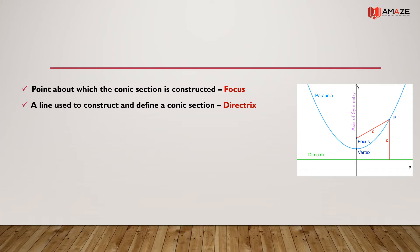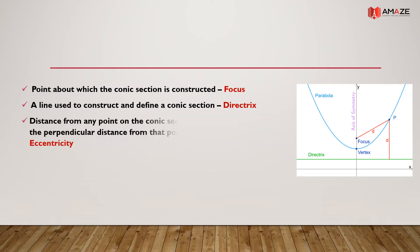A conic section is the locus of a point moving in a plane about a fixed point and a fixed line. The fixed point is called the focus and the fixed line is called the directrix. The distance from any point on the conic section to its focus divided by the perpendicular distance from that point to the nearest directrix is called its eccentricity.